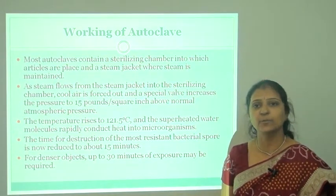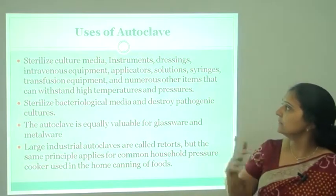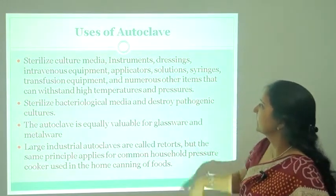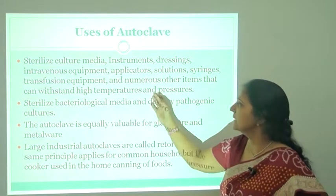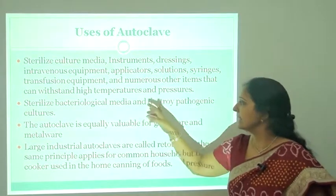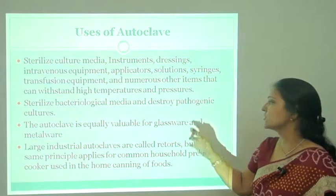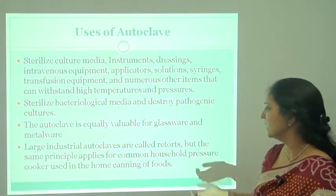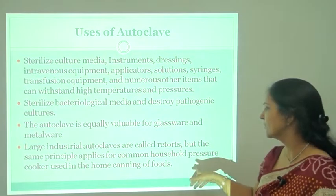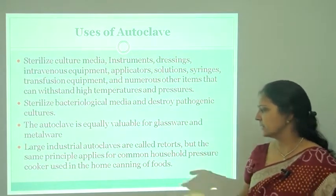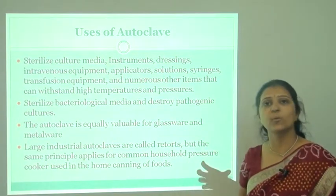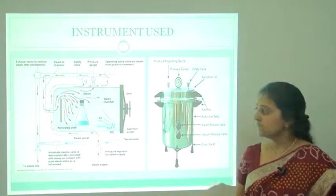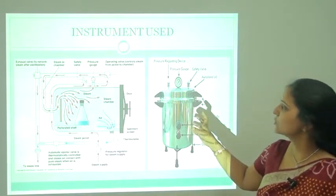We cannot increase the temperature and pressure beyond the standard because higher temperature and pressure may denature the medium components present in the object. The autoclave is used to sterilize culture media, instruments, dressings, equipment, solutions, syringes, needles, and numerous items that can withstand high temperature and pressure. It sterilizes bacteriological media and destroys pathogenic cultures. It is equally valuable for glassware and metalware. Large industrial autoclaves are called retorts, and the same principle applies to the common household pressure cooker.